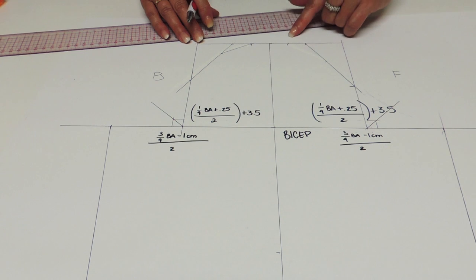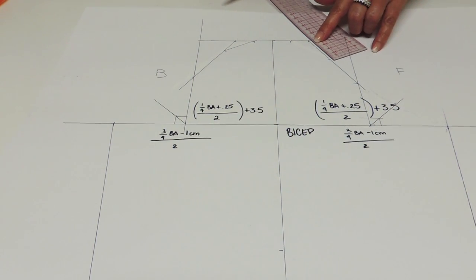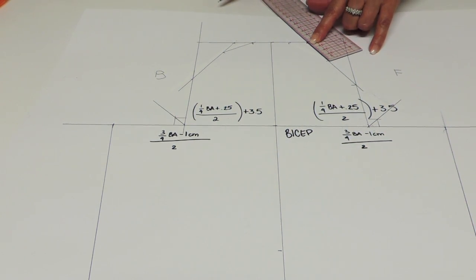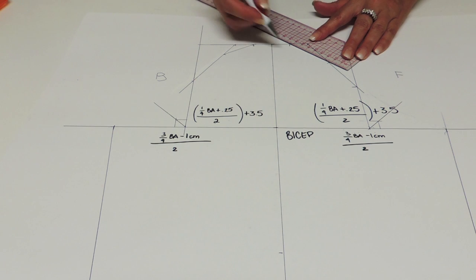For the front, you're going to take the half measurement and report it on the diagonal line. And also connect the two points together.